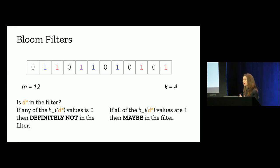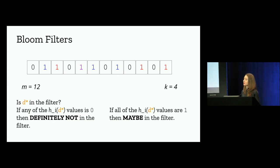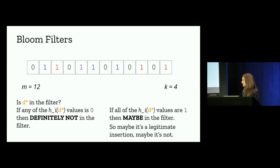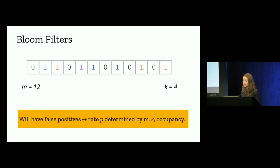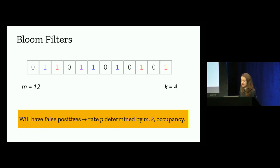How do we check if an item is in this filter? If any of the H(D*) values for an item D* is 0, then it's definitely not in the filter. If all of those H(D*) values are 1, then it might be in the filter — maybe it's a legitimate insertion, but maybe it's not. So we are going to have false positives. The false positive rate P is determined by M, K, and the occupancy of the filter.